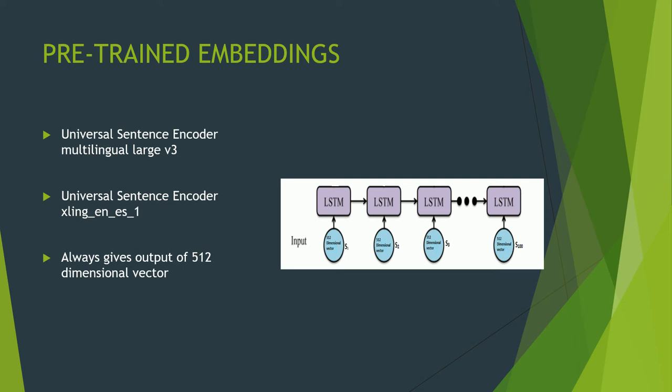Now for pre-trained embeddings, we are going to use Universal Sentence Encoders — two types. The first is Universal Sentence Encoder Multilingual Large Version 3, and the second is Universal Sentence Encoder xling-en-es, where 'ns' indicates English and Spanish. The first is trained on 16 different languages and the second exclusively on English and Spanish. Both always give a 512-dimensional vector as output.